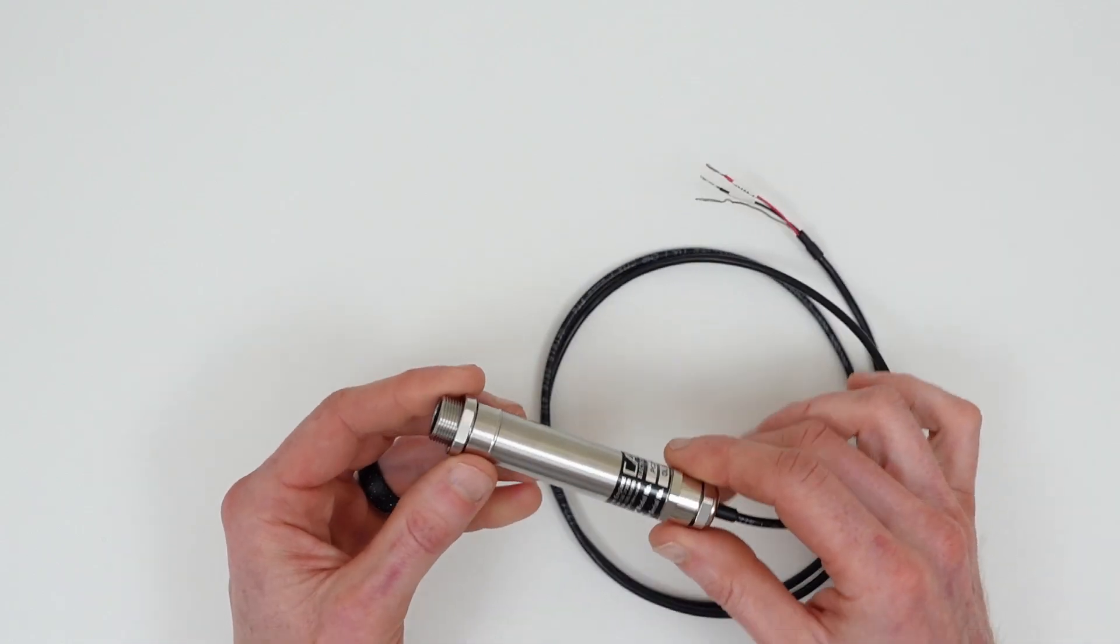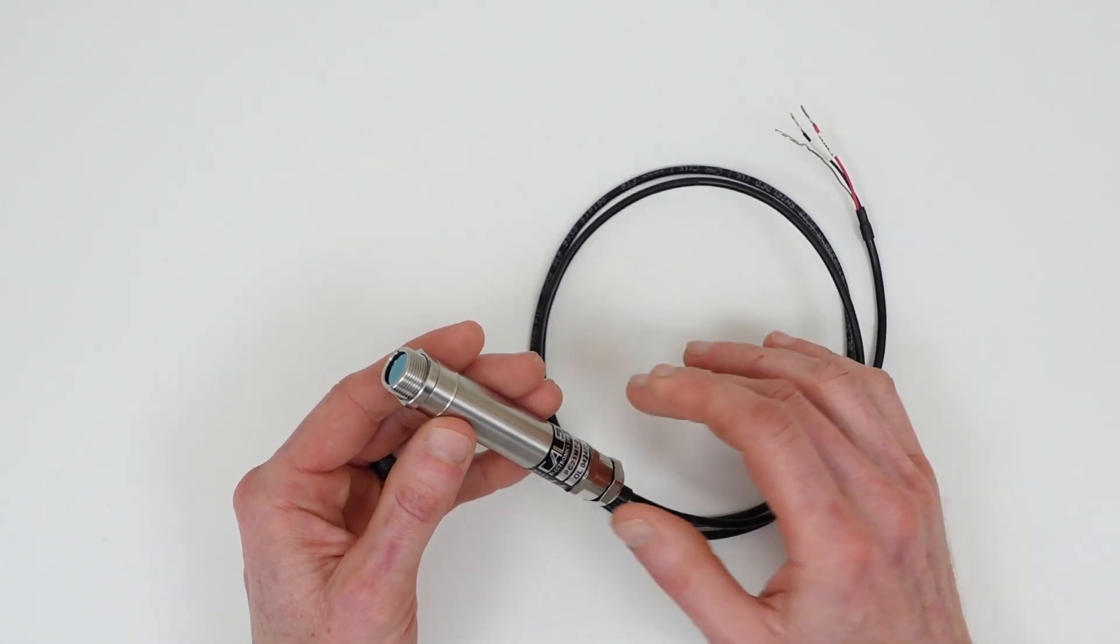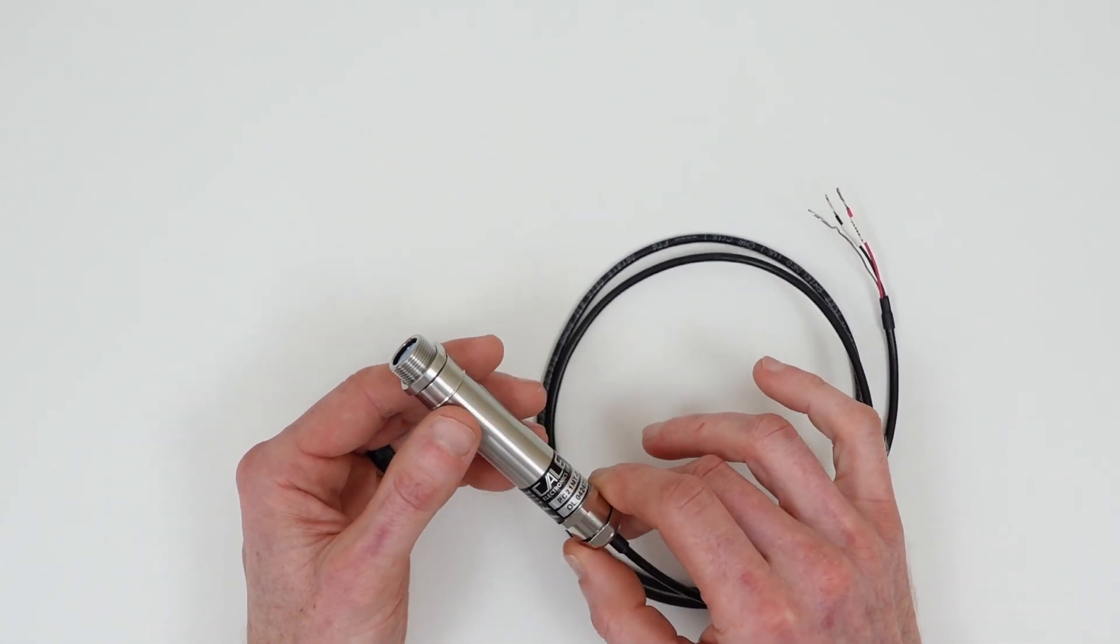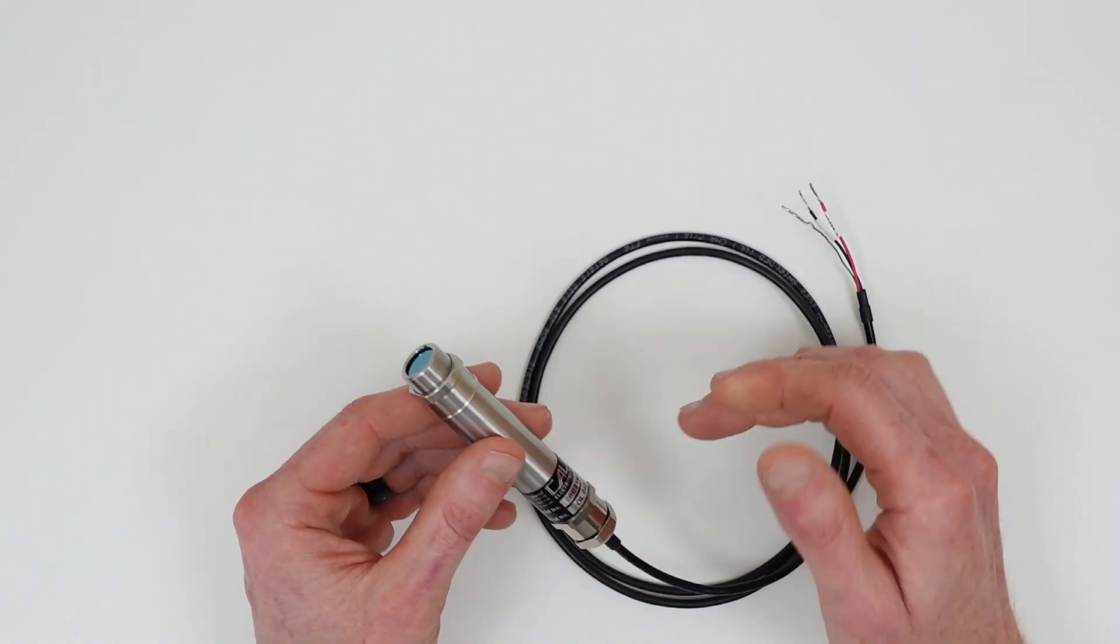This particular sensor is suitable for non-contact temperature measurement on most non-reflective, non-metallic surfaces such as paper, thick plastics, asphalt, painted surfaces, food, rubber and other organic materials.